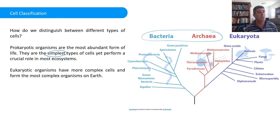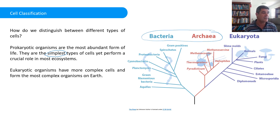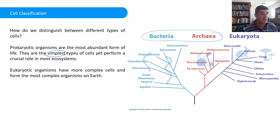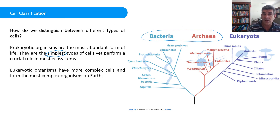Bacteria are the ones we're probably more familiar with — when we get sick with bacterial infections, they're the ones responsible for that. They come in a variety of different types: they can be spiral, rod-like, or spherical. The most important thing to say about all these different types of prokaryotic organisms — and what distinguishes the two groups from one another — is the lack...